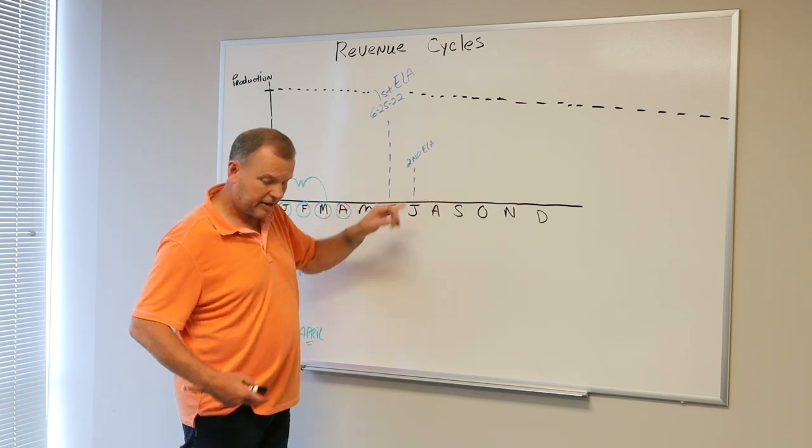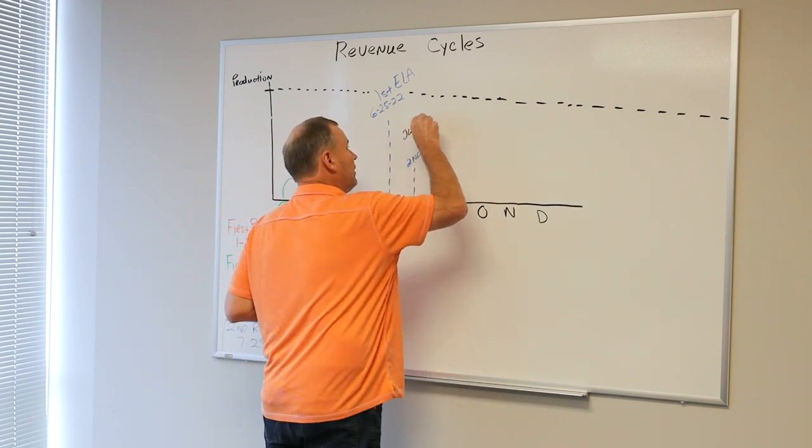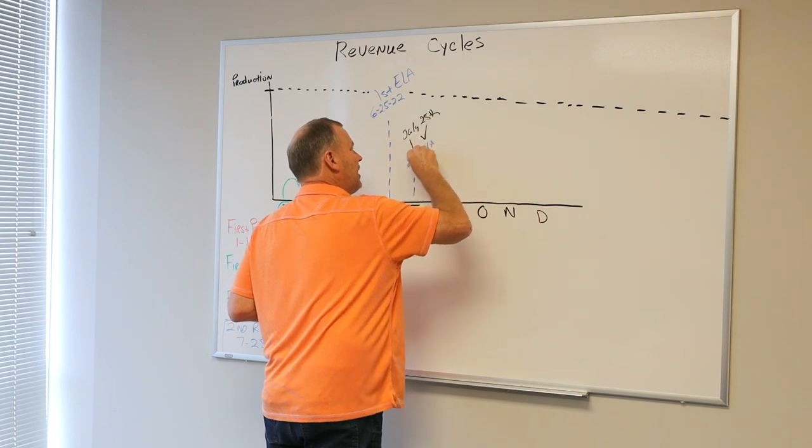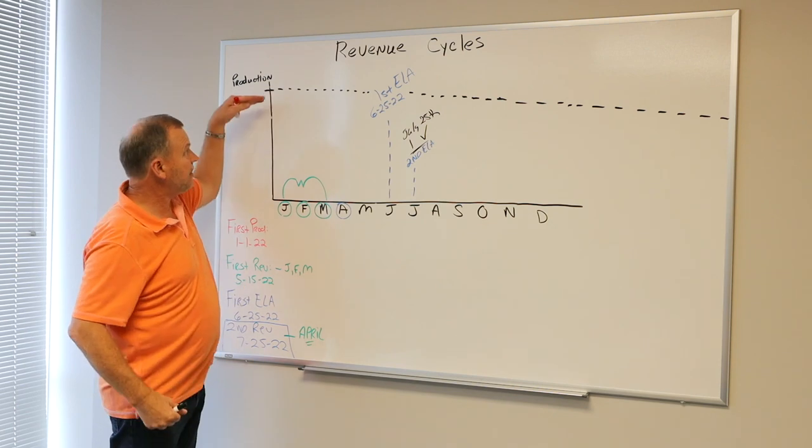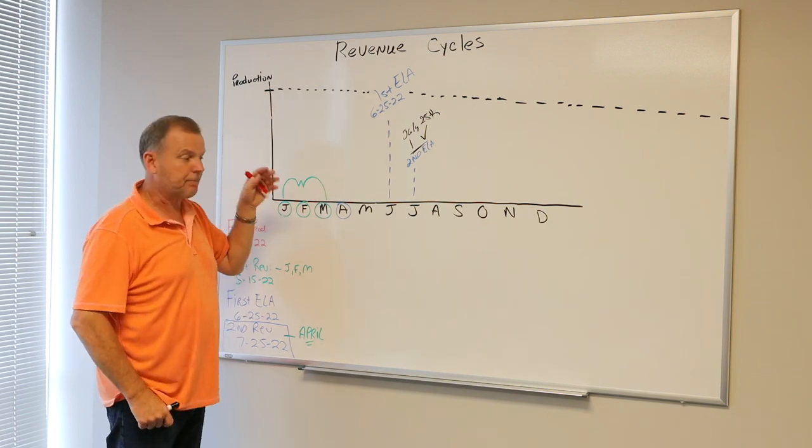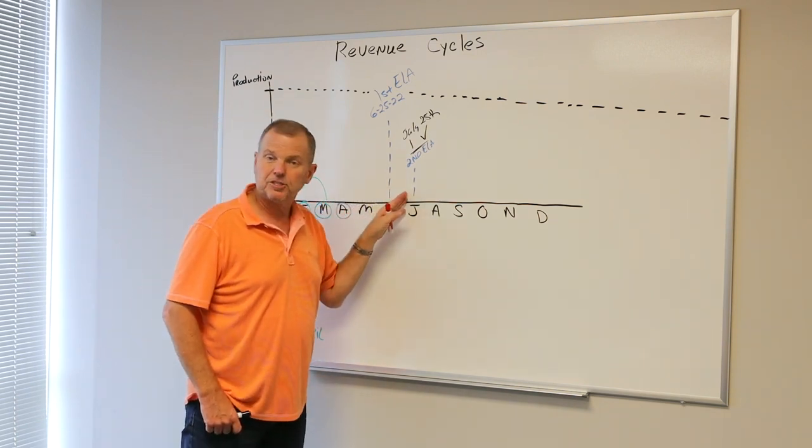And when you get that check, in this case it's going to be July 25th, it's one check. It's one month worth of revenue. So if everything stays the same, production and commodity prices, I would expect one third as big a check as I got the first time on my second check.